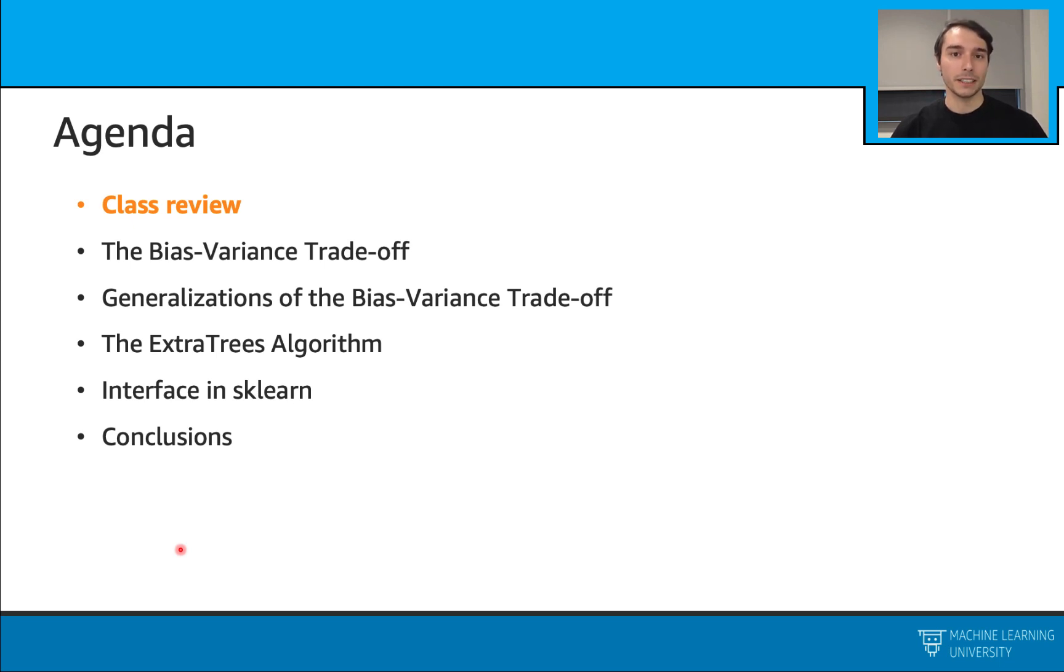We will look at these bias and variance terms, and we will make a decomposition of our errors in terms of these terms. Then we will look at some generalizations of this idea. We will try to see what happens when we have a randomized process and also have an ensemble of models.